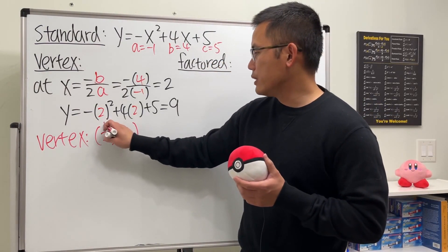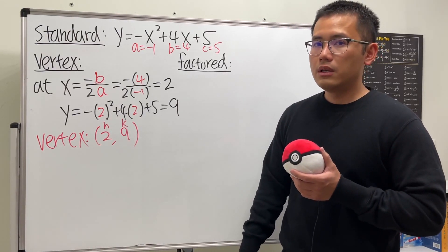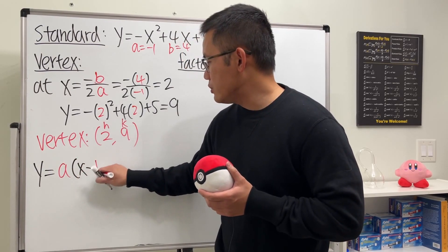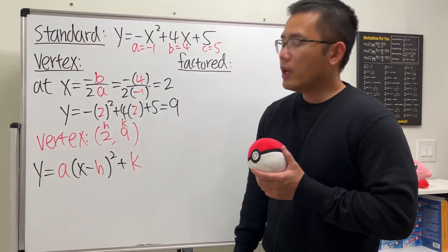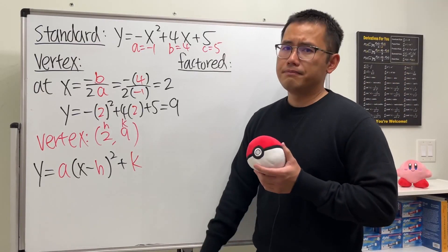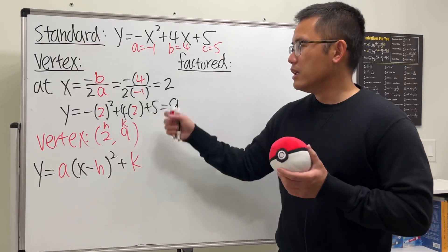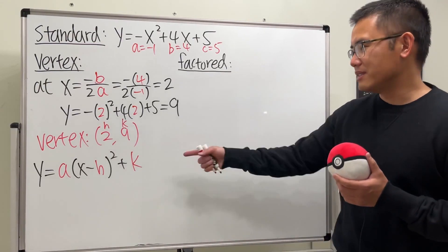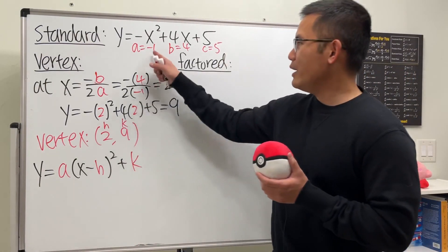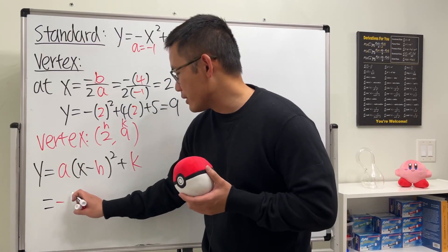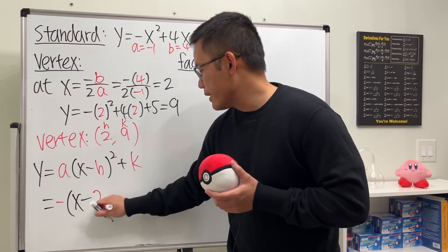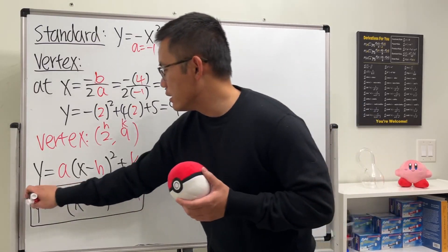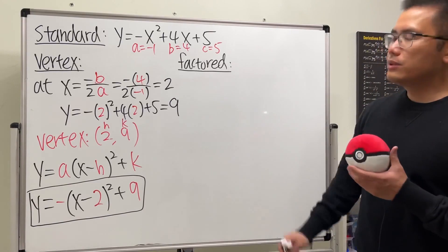Once we know the vertex, h equals 2 and k equals 9. The vertex form of the parabola is y equals a times (x minus h) squared plus k. You can also use the completing the square technique, but if you just want the vertex form, computing the vertex and plugging in is much easier. The a value is the same negative 1, so we get y equals negative (x minus 2) squared plus 9.